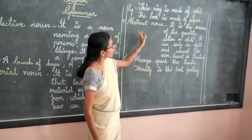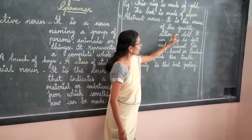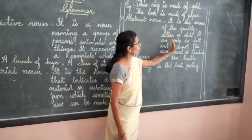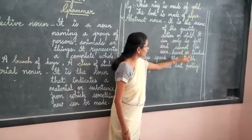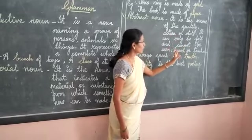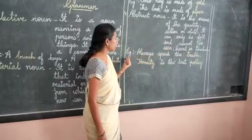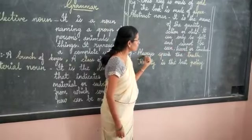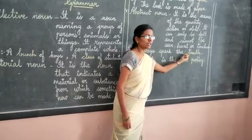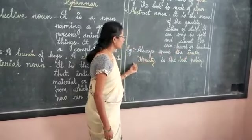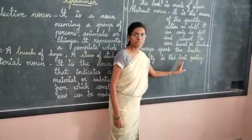What is abstract noun? It is the name of a quality, action or state. It can only be felt and cannot be seen, heard or touched. Example: 'Always speak the truth' — truth is the abstract noun. Second: 'Honesty is the best policy.'